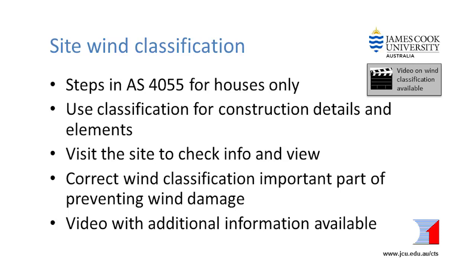This video has illustrated the steps presented in AS4055 for finding the wind classification for houses. The wind classification can then be used to select appropriate framing member sizes, bracing configurations, connection requirements, wall and roof cladding fixings, windows, and structural details to construct a house that will withstand the expected winds in this location. This example used online satellite imagery and contour maps. Regardless of what you use, it is recommended that you visit the site to check the view and to confirm that the site classification calculated looks reasonable.